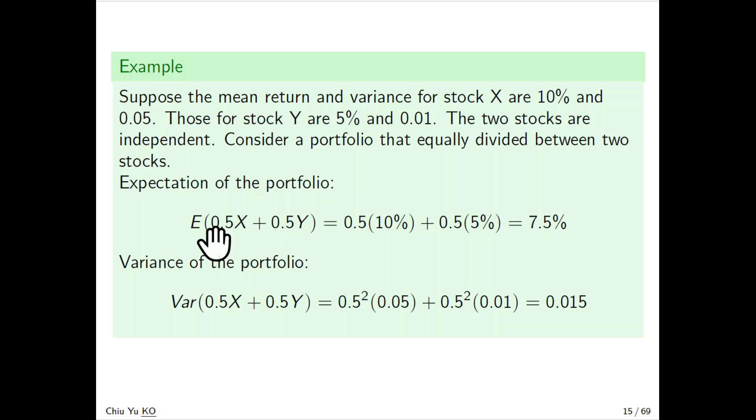This can be written as 0.5 times 10% plus 0.5 times 5%, which equals 7.5%.